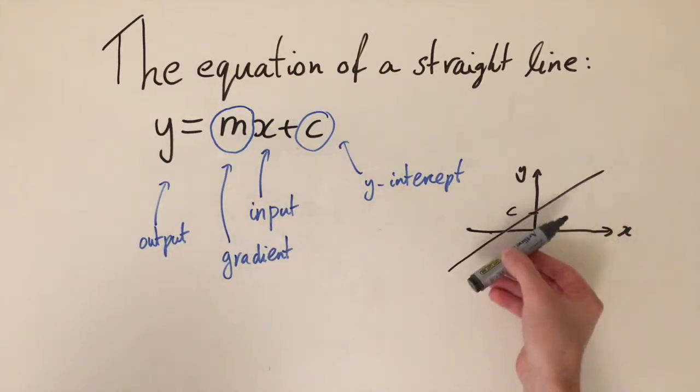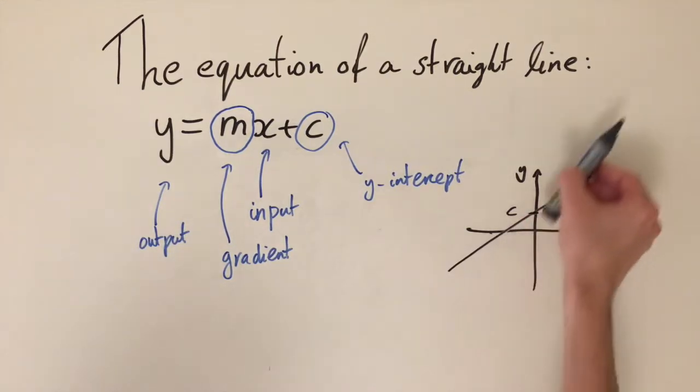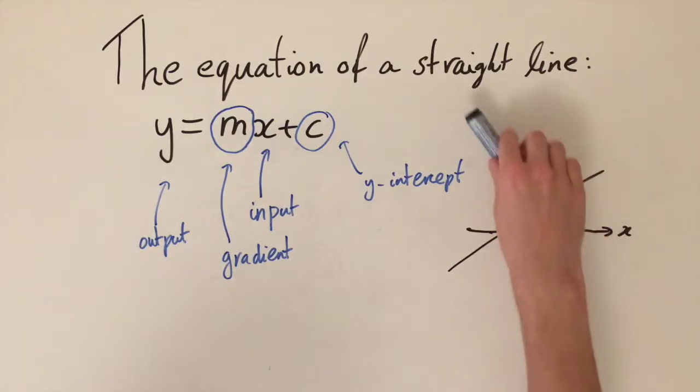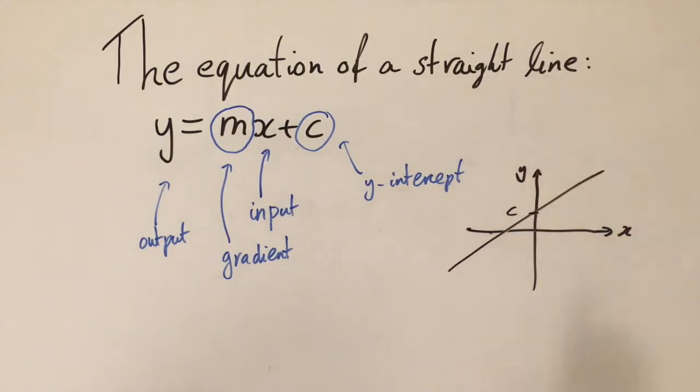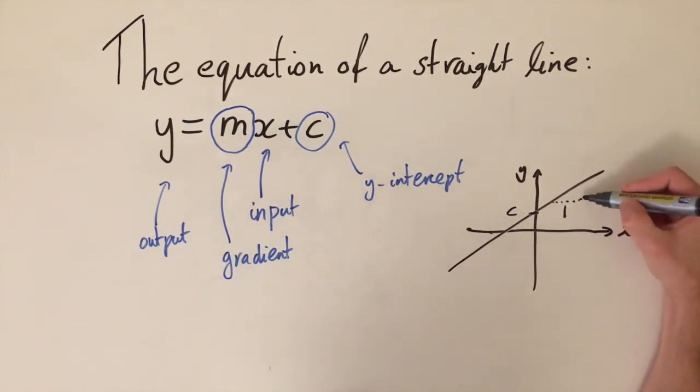So if m is really big, it's going to get pushed up here and go really fast upwards. But if m is negative, then it's going to go downwards in this direction. Another way you can think about this is if you move to the right by one unit, so we're moving to the right here and we go to the right by one, then we have to go upwards vertically by m units.